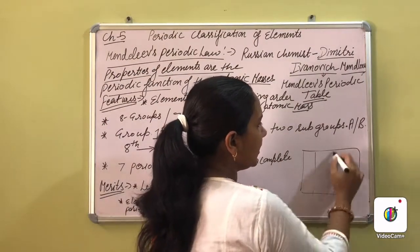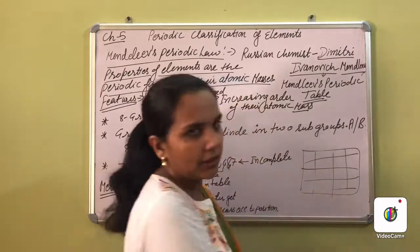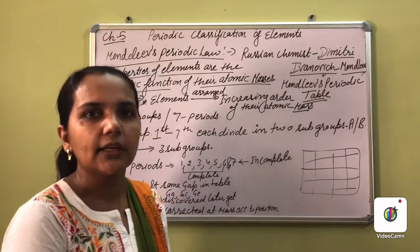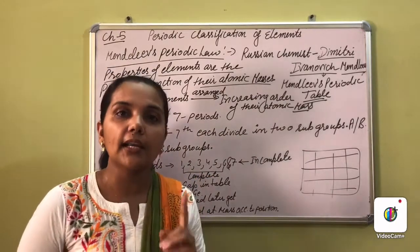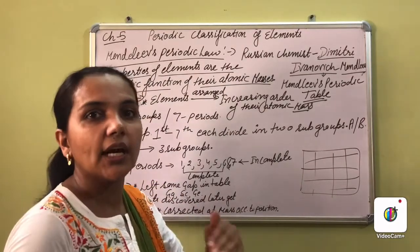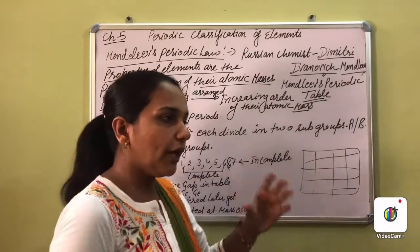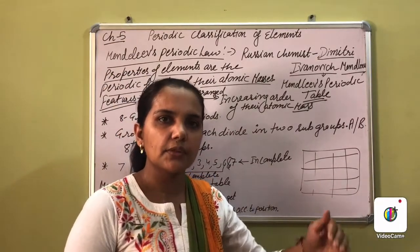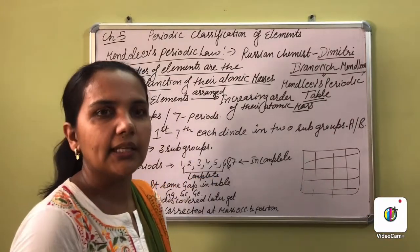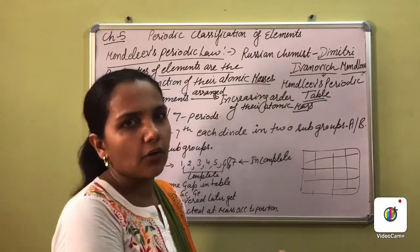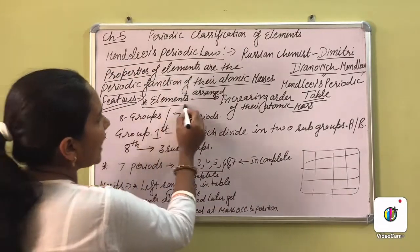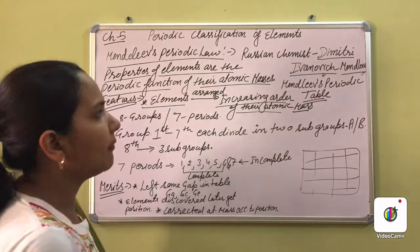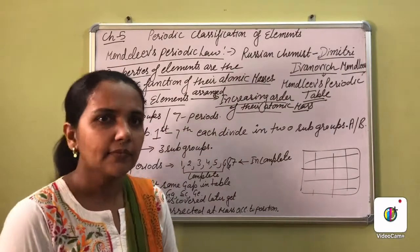Mendeleev arranged all elements in tabular form - dividing the table into rows and columns. The primary basis he used was increasing atomic mass. He arranged elements so that those with lower atomic mass came first, followed by those with progressively higher atomic mass - arranging them in order of increasing atomic mass.